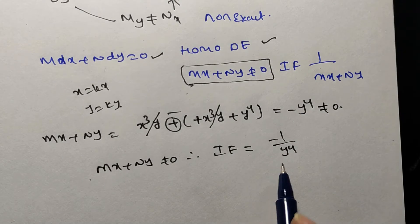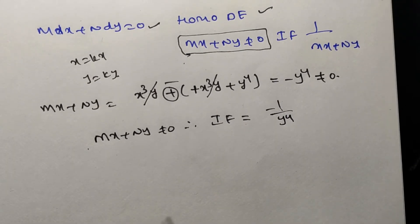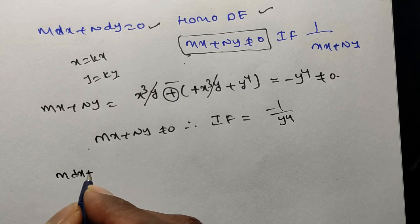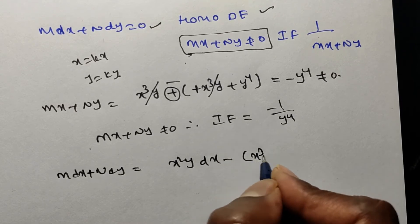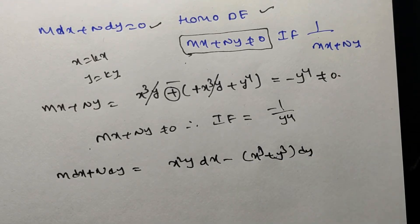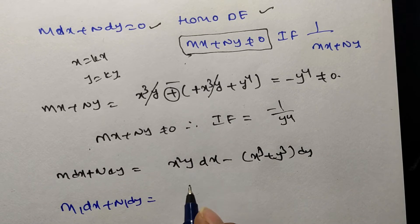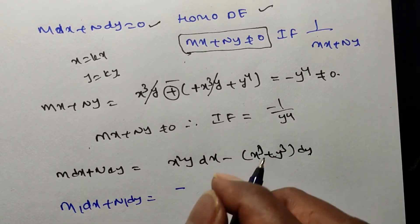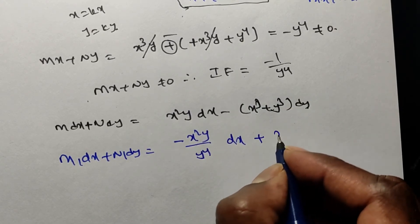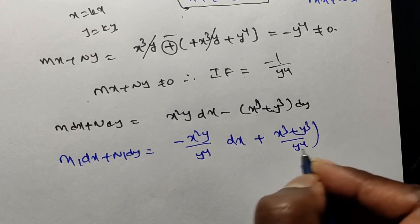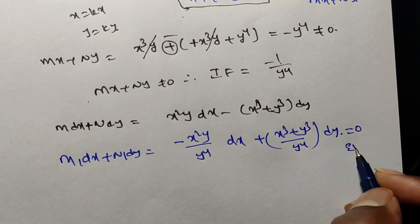Since Mx + Ny = −y⁴ ≠ 0, the integrating factor is 1/(Mx + Ny) = −1/y⁴. We multiply this integrating factor by M dx + N dy = 0. Multiplying −1/y⁴ through gives: (x²y/y⁴) dx − ((x³ + y³)/y⁴) dy = 0, which gives us M₁ dx + N₁ dy = 0, which is exact.